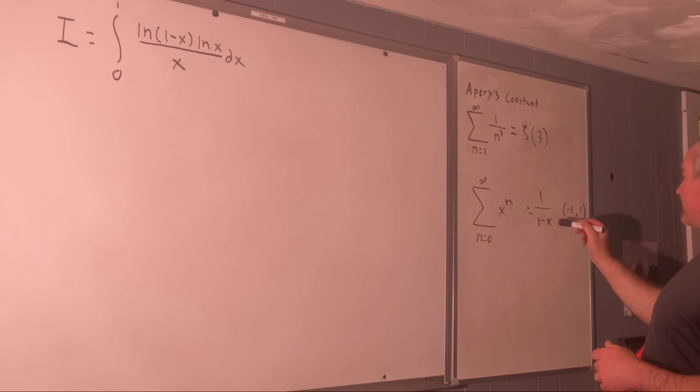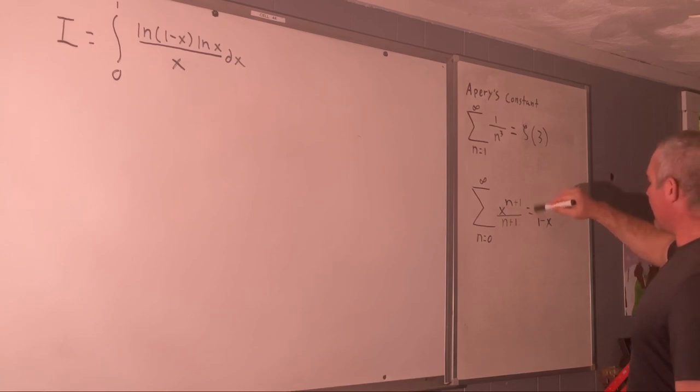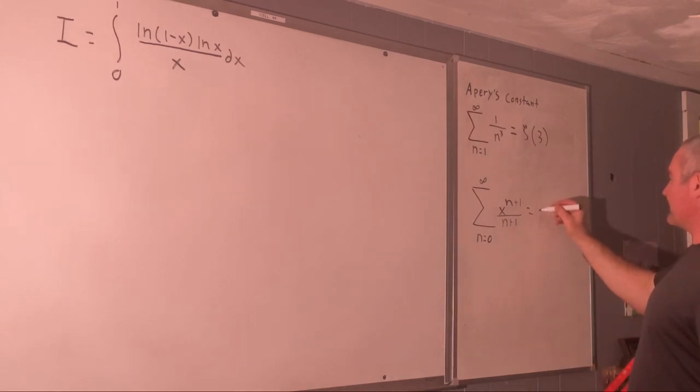So if we anti-differentiate this term by term, we get X to the N plus one over N plus one should be equal to the anti-derivative of this, which is of course negative natural log one minus X plus C.